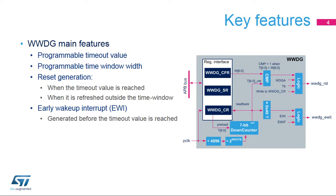The Window Watchdog offers several features. The user can program the timeout value and the window width according to application needs. It can generate a reset under two conditions: when the down-counter value becomes less than or equal to 0x3F, or when the watchdog is refreshed outside the time window.